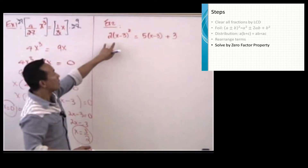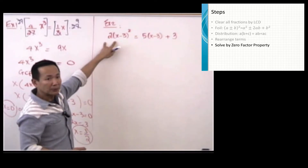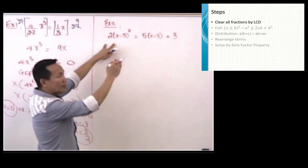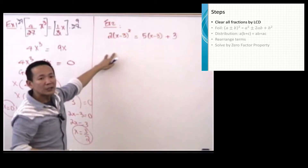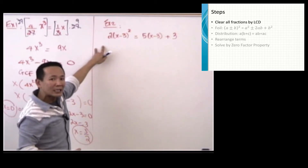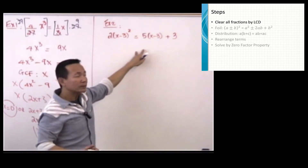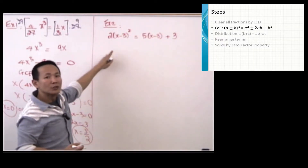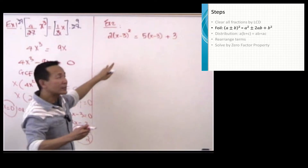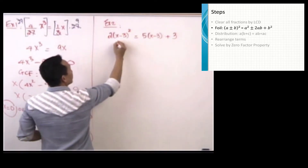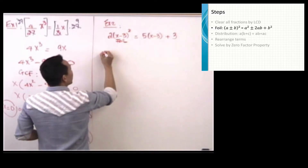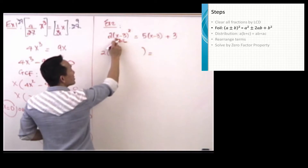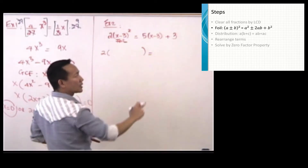Now I will show you the second example. We go through all steps. Ask yourself: do I need to clear any fractions? We don't see any, so we skip the first step. Second, do I need to FOIL? Yes. I prefer to FOIL this out mentally. This matches the formula A minus B to the second power.